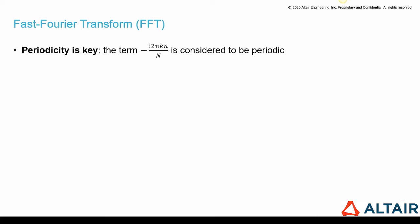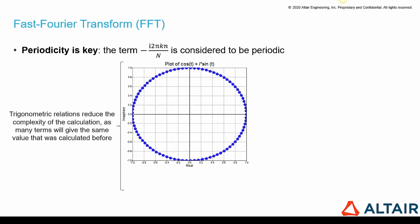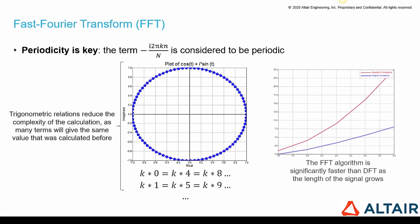But how is that achieved? For that, periodicity is key because this term is considered to be periodic. And trigonometric relations reduce the complexity of the calculation, as many terms will give the same value that was calculated before, as we can see here. And the FFT algorithm is significantly faster than DFT as the length of the signal grows.